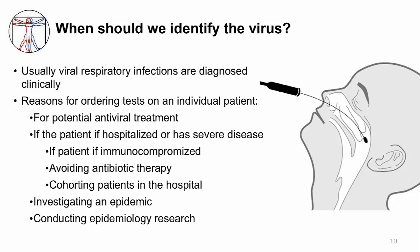The image on the right shows you how we obtain samples to identify a virus. It is called a nasopharyngeal swab, and it needs to be put all the way to the back of the nasopharynx in order to get the correct sample. If you've ever had one of these, you know it's a bit uncomfortable, but it's very important to do the collection correctly, otherwise you will not be able to identify the virus.